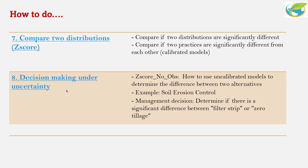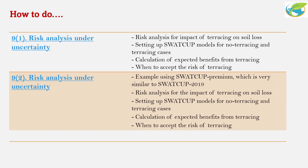In video number eight, I talk about decision-making under uncertainty, and again I use the Z-score. Here you can determine the difference between different alternatives — for example, if you want to do erosion control, should you use a filter strip, should you use zero tillage, or what sort of option should you use, and what is the difference between different options.